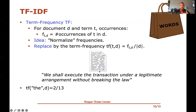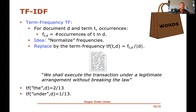For example, if I look at the term frequency of 'the' in document D, I count how many times it occurs — it occurs twice — and the total length of this document is 13. So the term frequency of 'the' in D is 2/13. For the word 'under', which occurs only once, the term frequency is 1/13. With bag of words, 'the' would have a count of two and 'under' a count of one. Using term frequencies means dividing all bag of words entries by the document length, making vectors comparable across different document lengths.